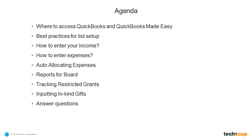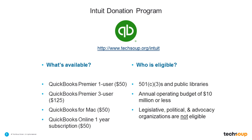Right now we have 630 people on the line with that number continuing to climb. Keep in mind that while we will do our best to answer as many questions as we can, it is only 90 minutes and we are not going to be able to get into the nitty-gritty details of every question about your specific QuickBooks scenario. If you are joining from outside the United States, we recommend checking out TechSoup.Global and choosing your country from the drop-down to see what is available to your organization.